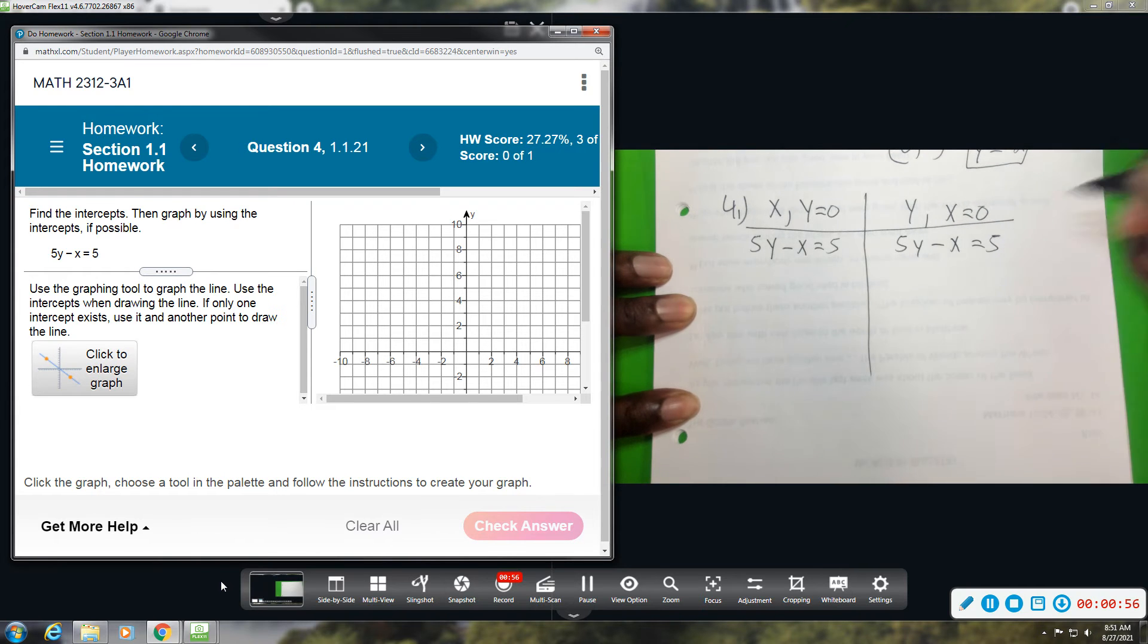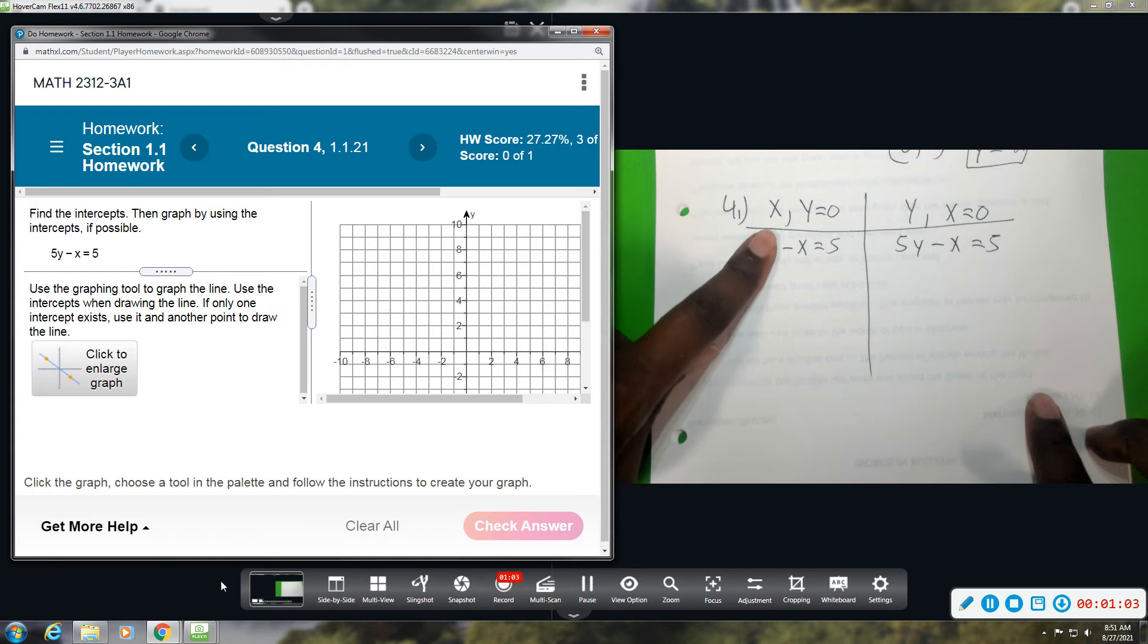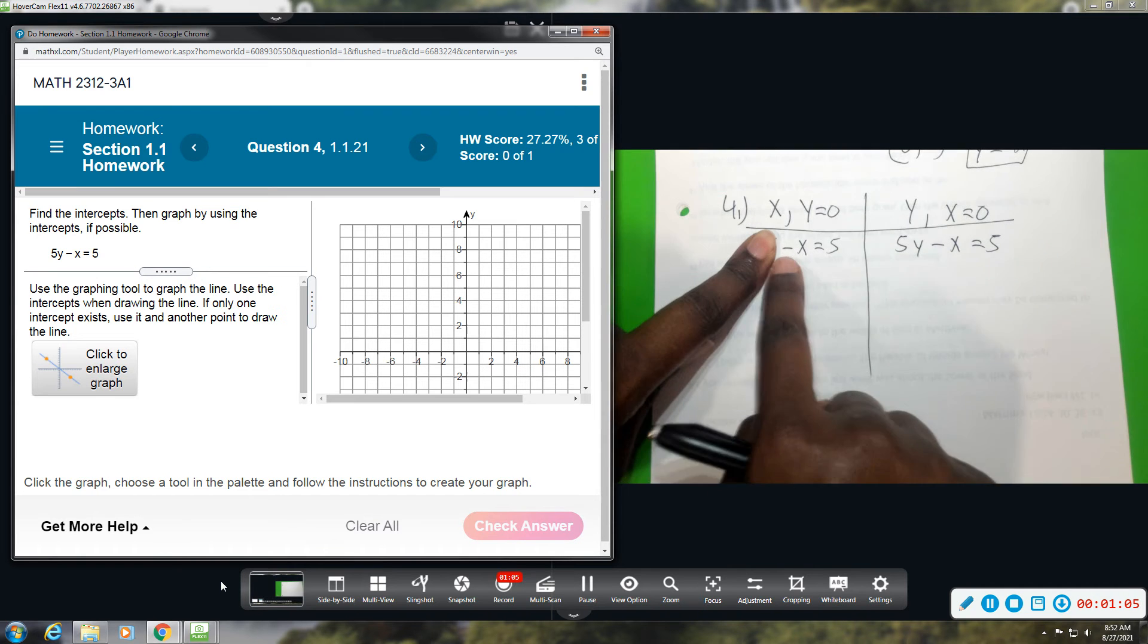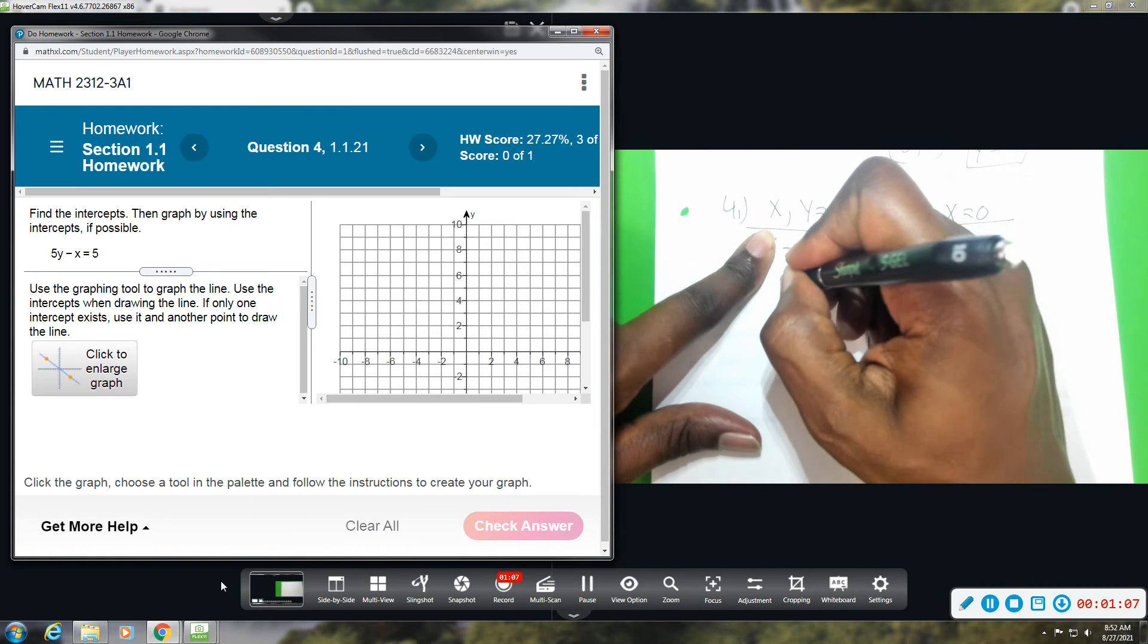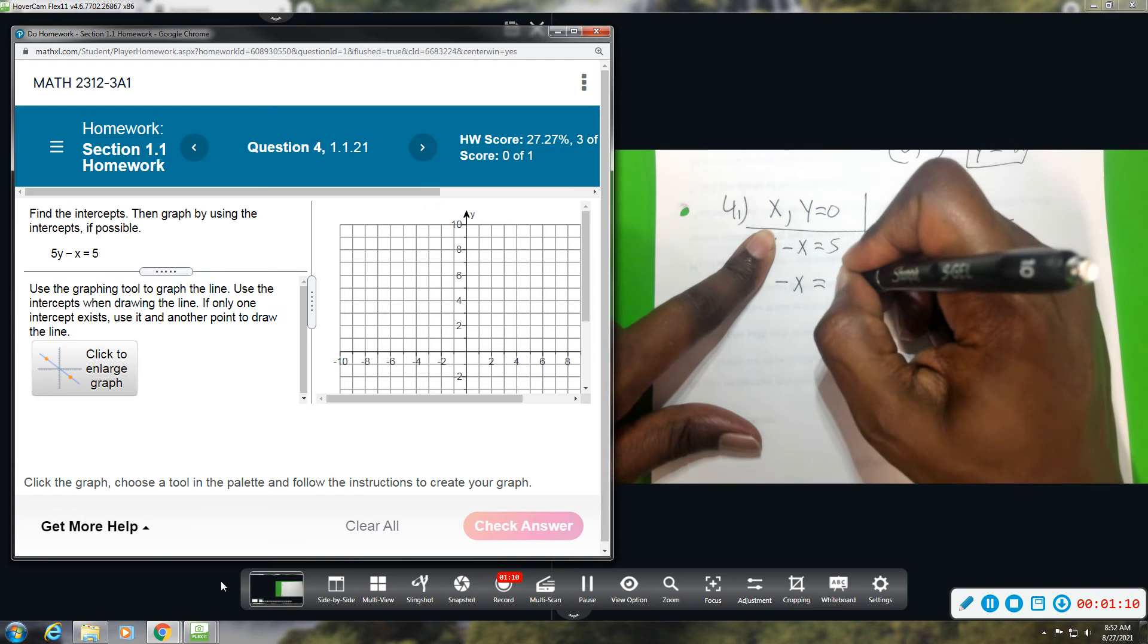Okay, so what I like to do, whenever you plug in zero, it just pretty much cancels out that term. So if I plug the zero for y, that term would go away, and this is what I will be left with. Negative x equals 5.